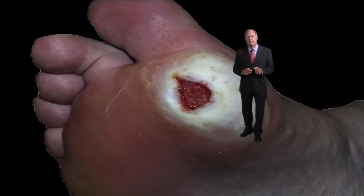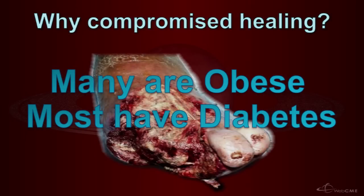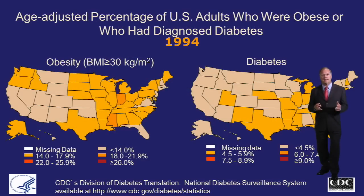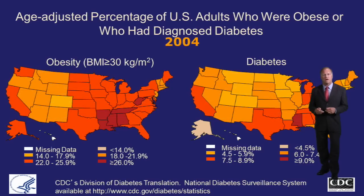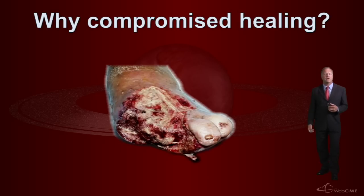The wound type selected on Wheel of Wounds was the diabetic foot ulcer. Let's look more closely at the management of a patient with a diabetic foot ulcer. These patients are clearly compromised from a healing standpoint — many are obese, most have diabetes. Let's look at changing trends in the United States: diabetes correlates very closely with obesity, and as the map becomes more red decade by decade, the incidence of diabetes is increasing.